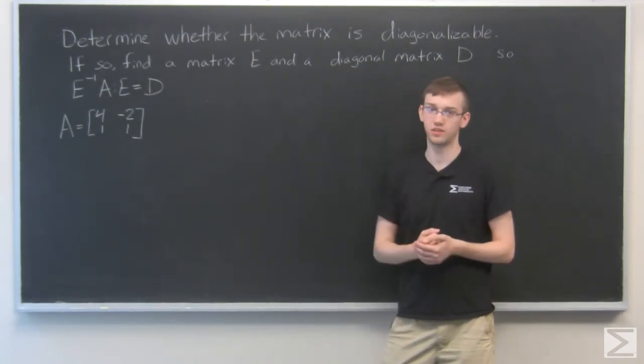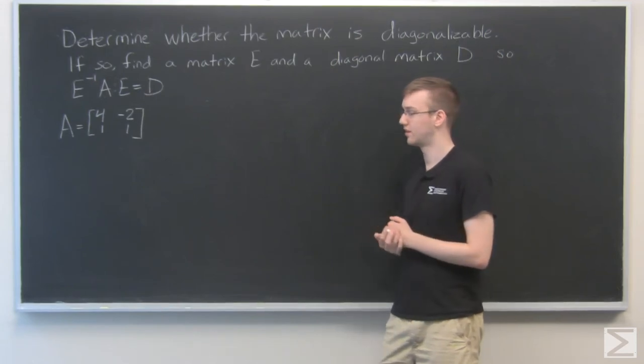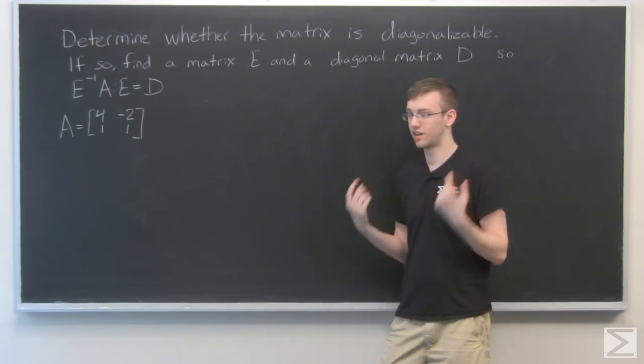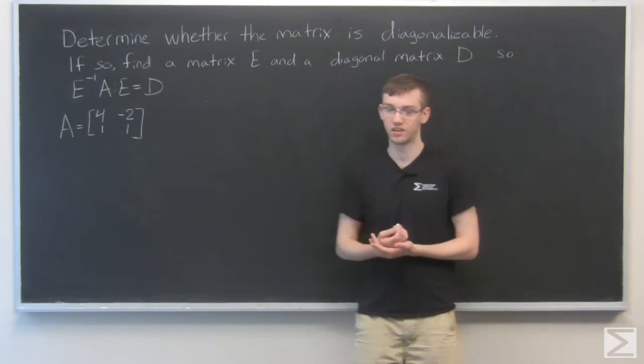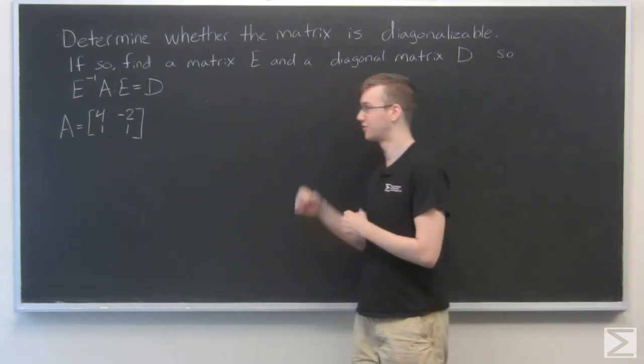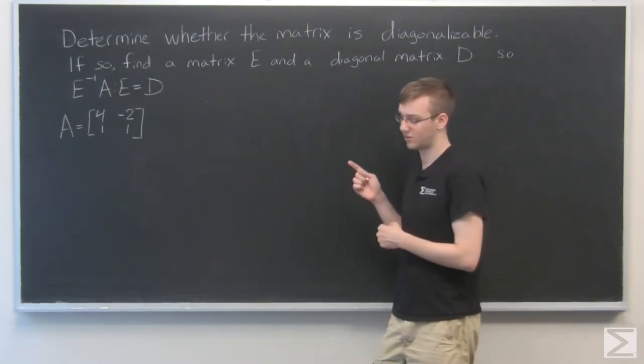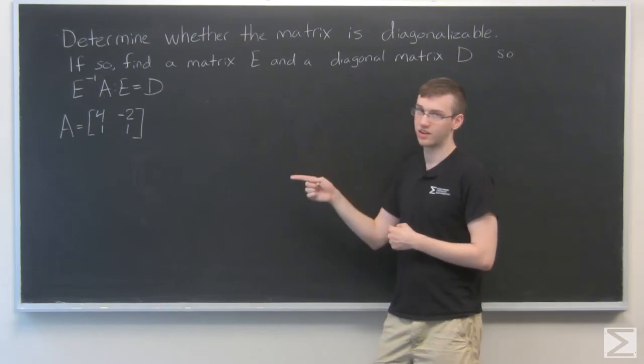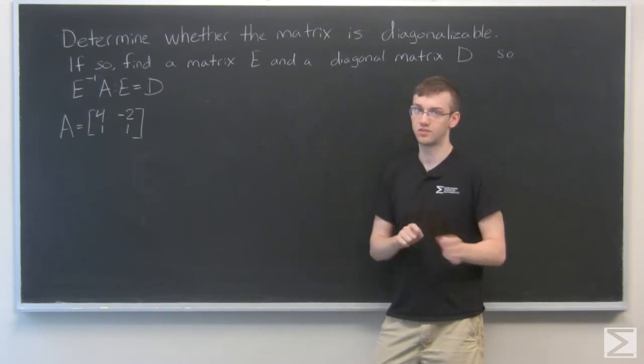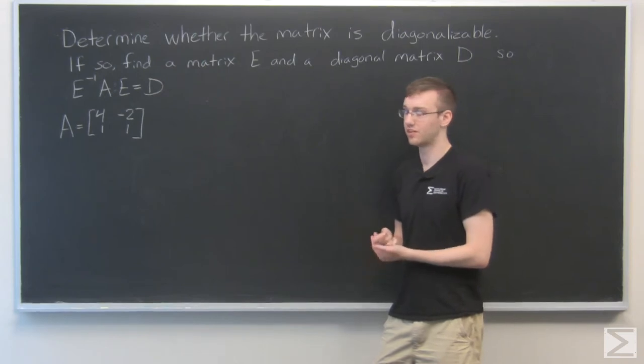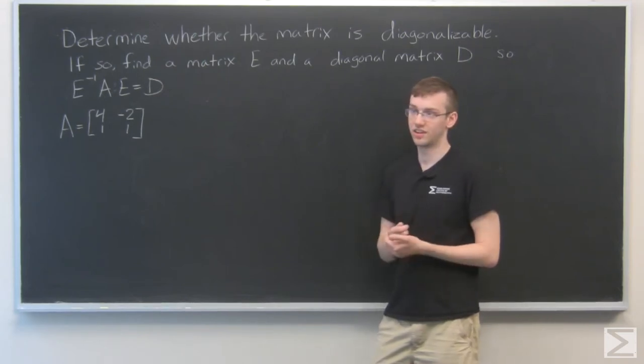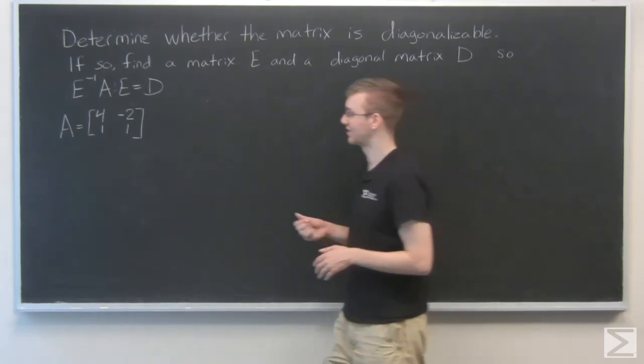We have a method for going about this, and it involves finding eigenvectors and eigenvalues and putting them all together. So the first thing we need to know is that if we find eigenvalues for this matrix, if they are distinct, like if they are not the same value, then it is indeed diagonalizable. So let's do that first.